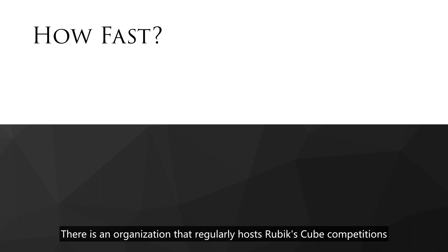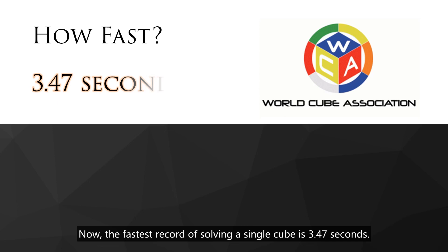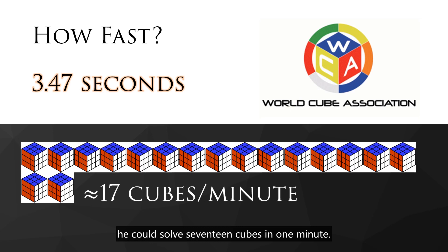And then people started to compete for how fast they could solve the cube. There is an organization that regularly holds Rubik's cube competitions and records how fast participants can solve it — it's the World Cube Organization. Now the fastest record of solving a single cube is 3.47 seconds. If someone can keep solving the cube at this speed, he can solve 17 cubes in 1 minute. However, such a fast speed only occurs by chance, even for the most talented cubers.